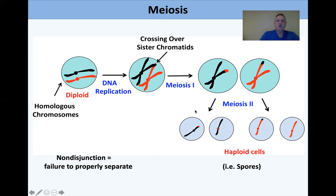Meiosis two generates four progeny that are all haploid but not identical — rather they're homologous to each other, basically like siblings. If you don't do meiosis properly, what can often happen is non-disjunction.